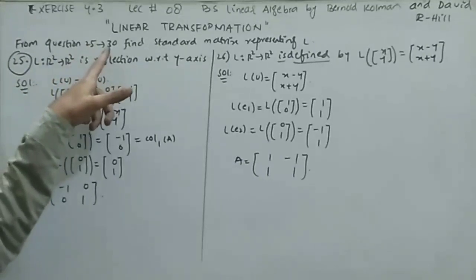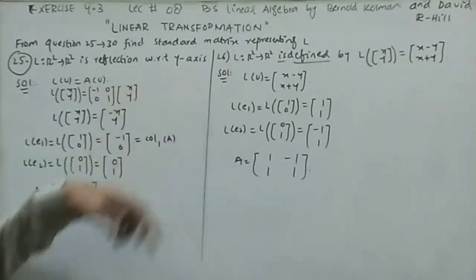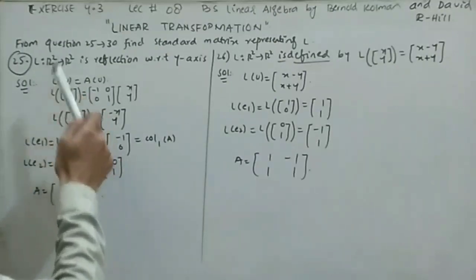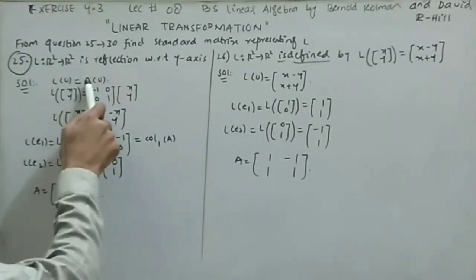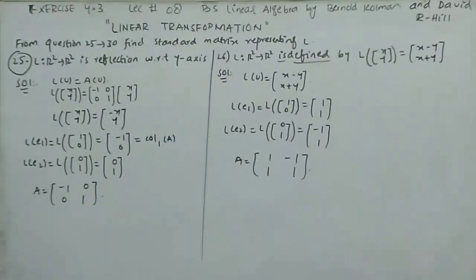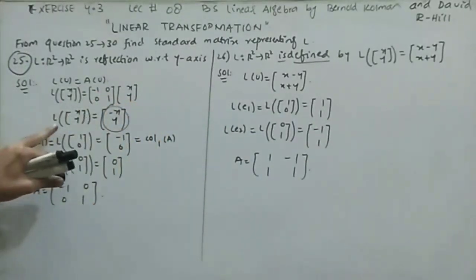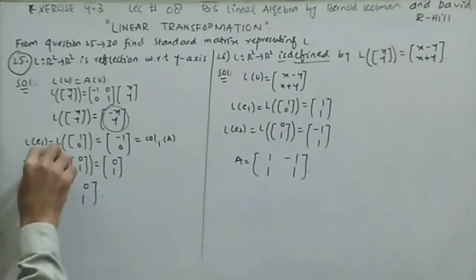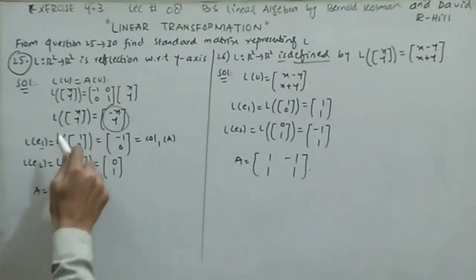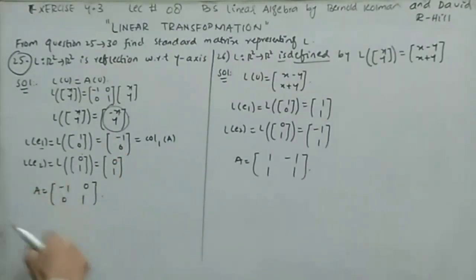Questions 25 through 30 ask for the standard matrix representing each linear transformation. Question 25: L is a reflection of R² with respect to the y-axis. We know L(x,y) = (-x, y). Evaluating at e₁=(1,0): L(e₁) = (-1, 0). Evaluating at e₂=(0,1): L(e₂) = (0, 1). The standard matrix A = [-1,0; 0,1].